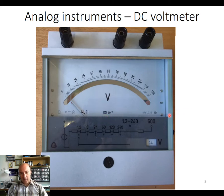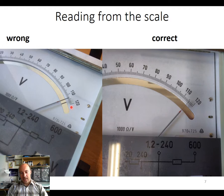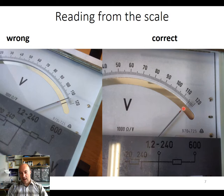It is very important to know how to read correctly from the scale. All instruments have a mirror behind the scale, and if you want to read correctly you need to position yourself so that the needle and its reflection in the mirror are aligned — you just see one line. Here is an example of how to read it correctly: this would be 115.5 divisions.